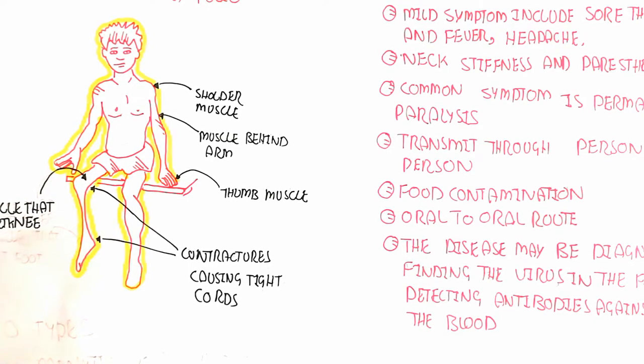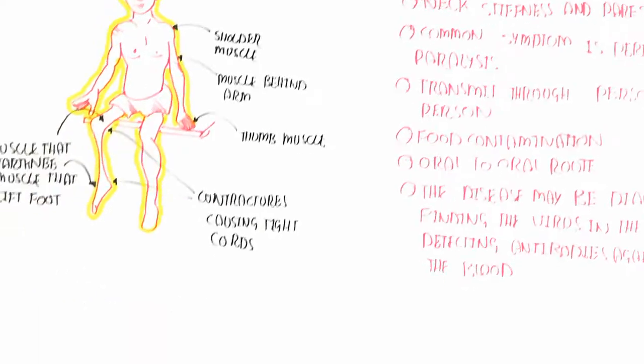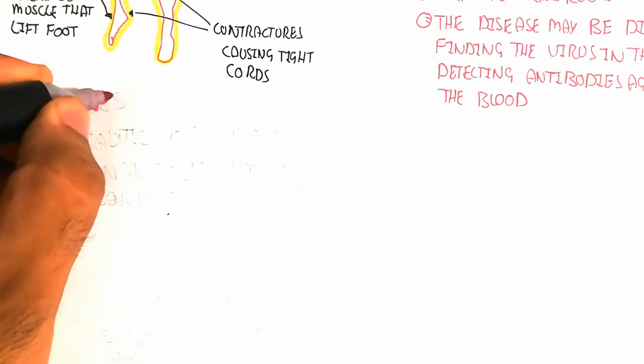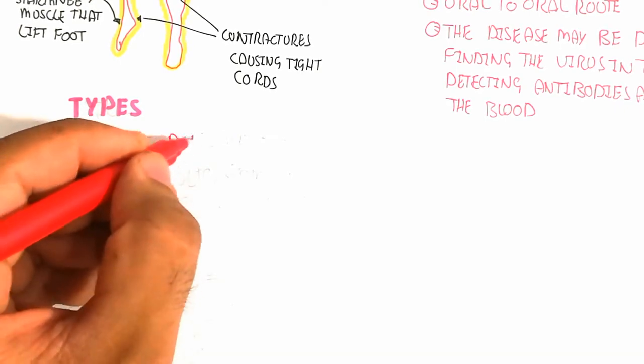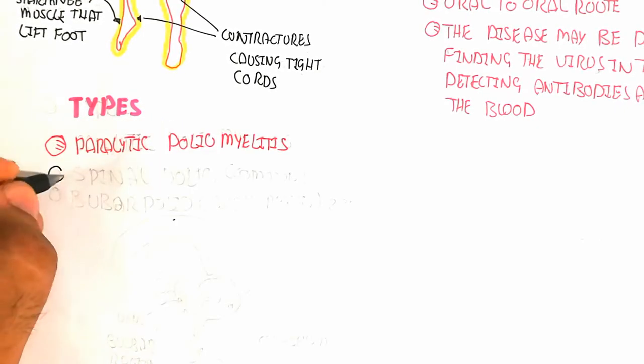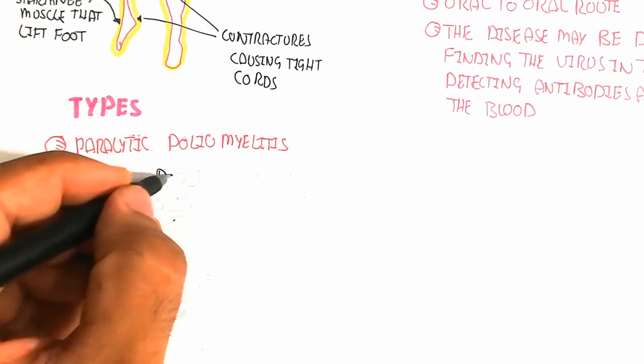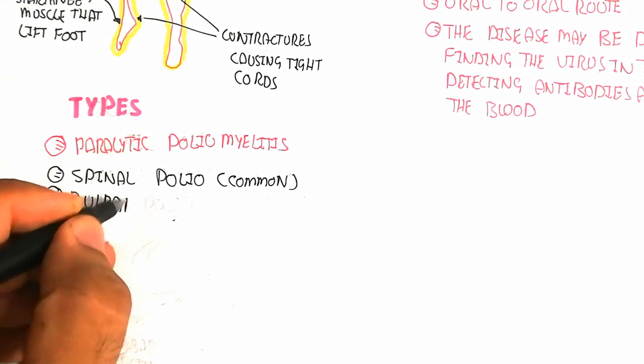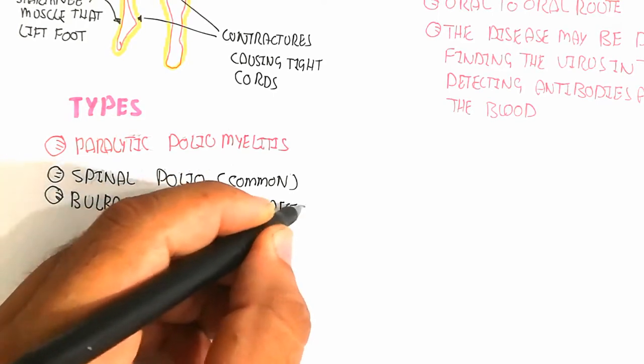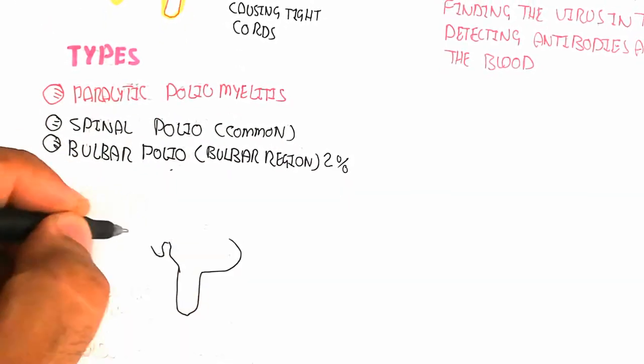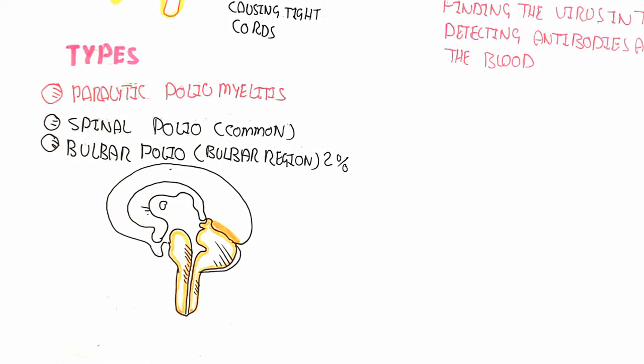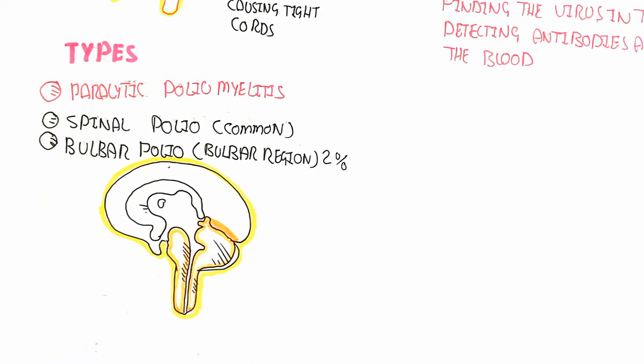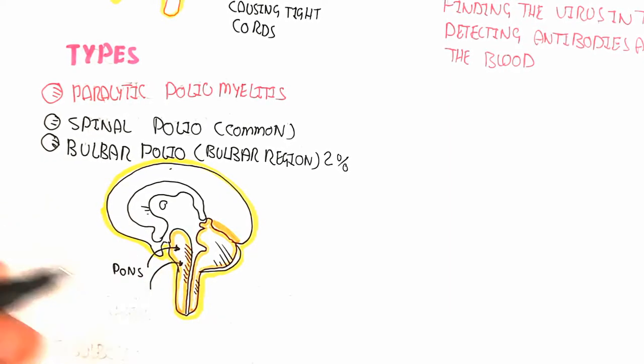Let's begin to understand the types of polio virus and the pathogenesis. Paralytic poliomyelitis is made up of spinal polio, which is common, and bulbar polio, which affects the bulbar region (2%). Bulbar region means the bones, spinal cord, upper part of the spinal cord, medulla, and cerebellum.